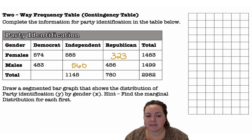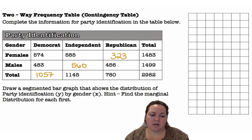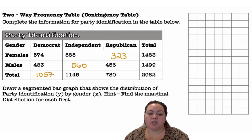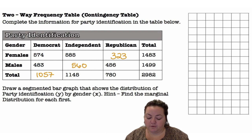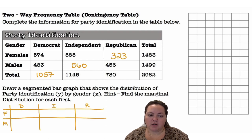If I subtract 585, I get 560. And if I add the Democrats together, I get 1,057. Now draw a segmented bar graph to show the distribution of party identification (Y) by gender (X). The hint is to find the marginal distributions for each first.